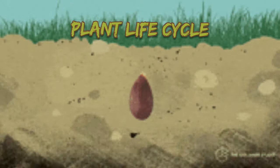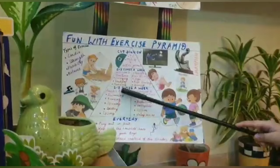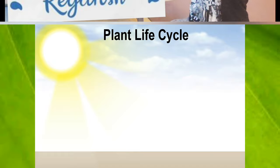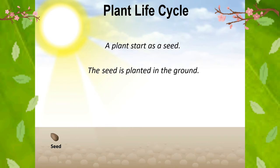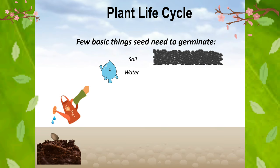Friends, today we will learn life cycle of a plant. You know friends, a plant starts as a seed. The seed is planted in the ground. There are few basic things a seed needs to germinate: soil, water, sunlight and air.